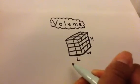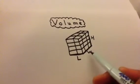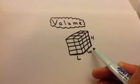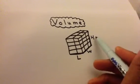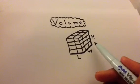Now length means how long something is. Width means how wide something is. And height, that means how high or how tall something is.